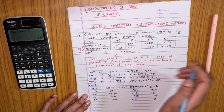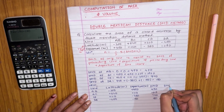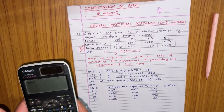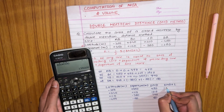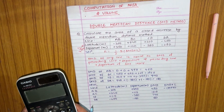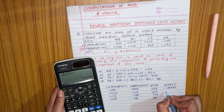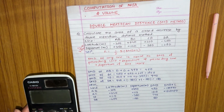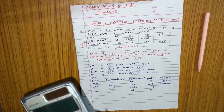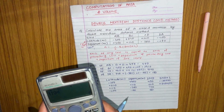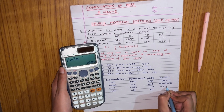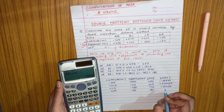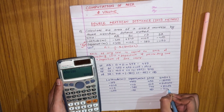Since area equals half of the summation of DMD into L, where L is the latitude, we calculate DMD into L for each line: 450 into minus 300 equals minus 135,000; 1010 into 640 equals plus 646,400; 740 into 110 equals plus 81,400; and 180 into minus 400 equals minus 72,000.